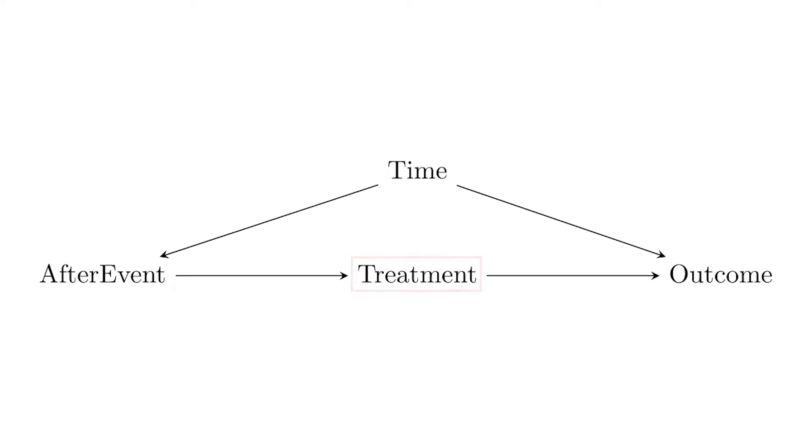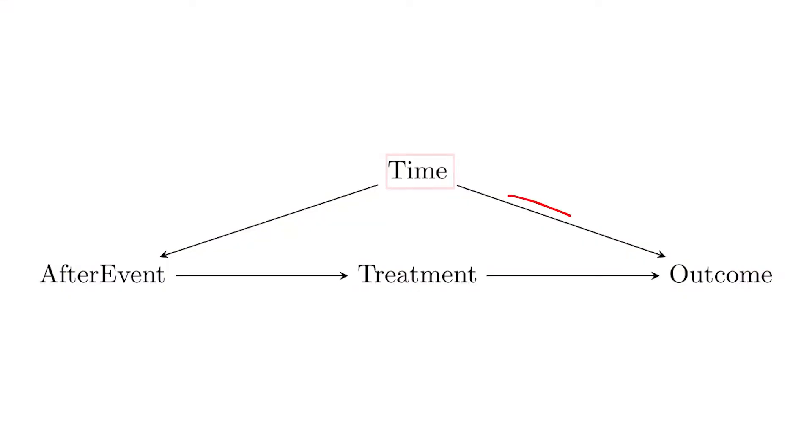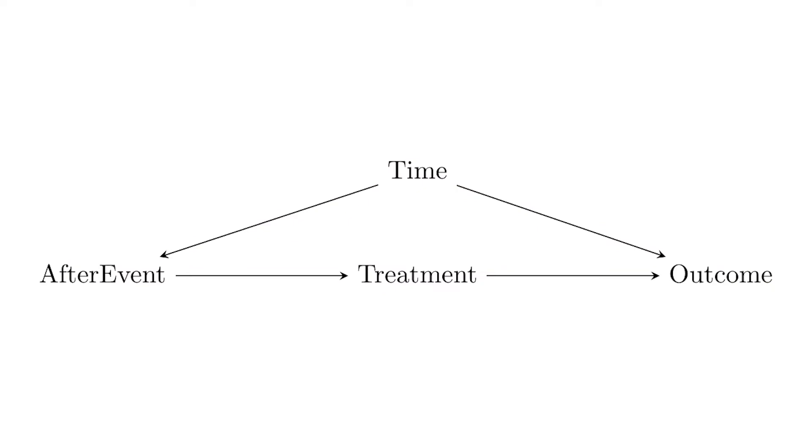This is a very simple design — comparing before to after — and there's a simple causal diagram that reflects it. We have some treatment whose effect on the outcome we want to know, and that treatment goes into effect at a particular time. You're either before that time and untreated, or after the event time and treated. Whether you're treated is entirely based on whether you're before or after that period. Time also independently affects the outcome, so we have an arrow from time to the outcome, giving us a clear backdoor we're trying to close.